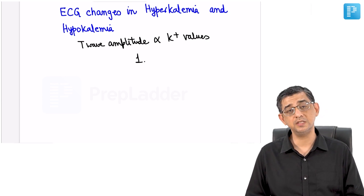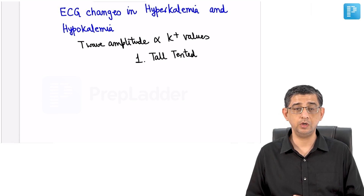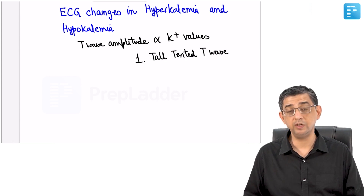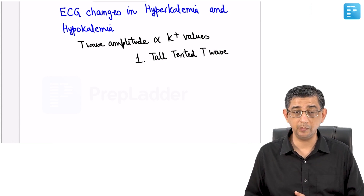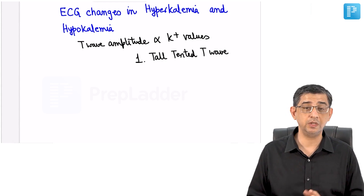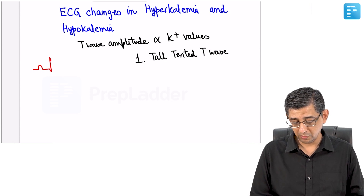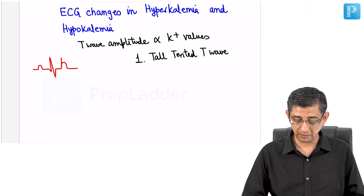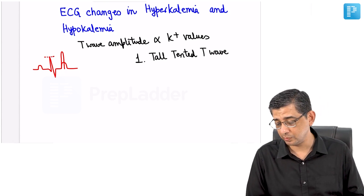The earliest ECG finding in a patient suffering from hyperkalemia is tall tented T waves. Do not confuse these with hyper-acute T waves — hyper-acute T waves have a relatively rounded edge and are encountered in myocardial infarction. Tall tented T waves are relatively pointed, and their height can even exceed that of the R waves. In hyperkalemia, the amplitude of the T wave dramatically increases and there's a distinct possibility the height might even exceed the R wave.